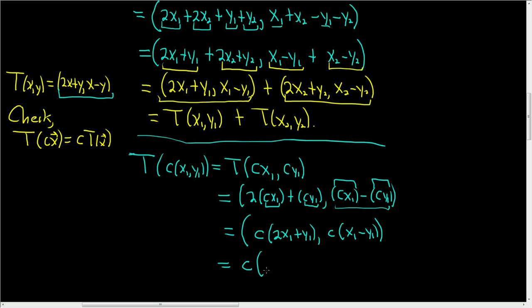And now we can factor out the c completely. This is c, parentheses, 2x1 plus y1, comma, x1 minus y1.